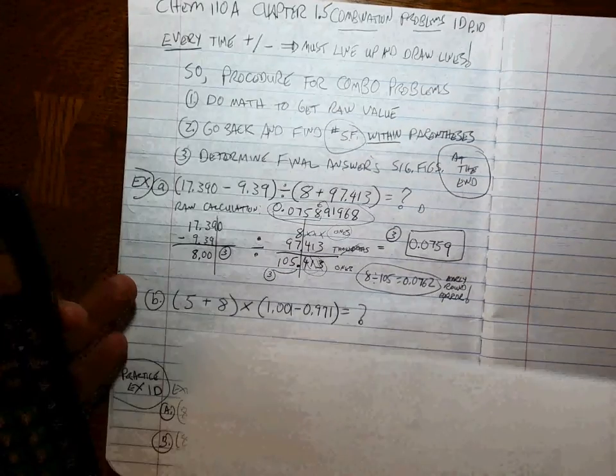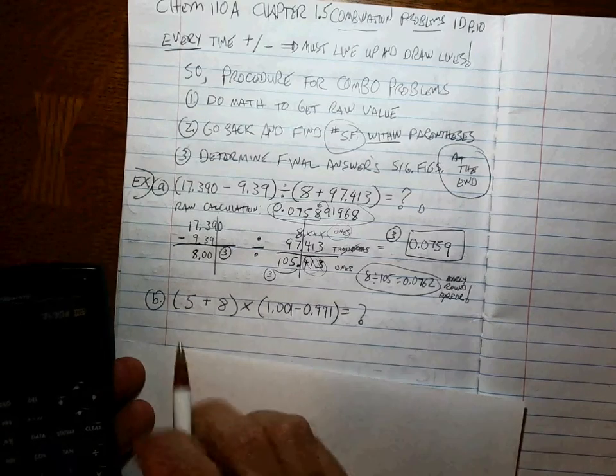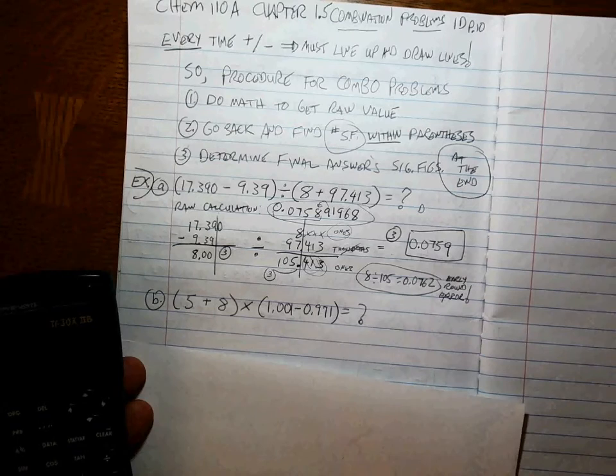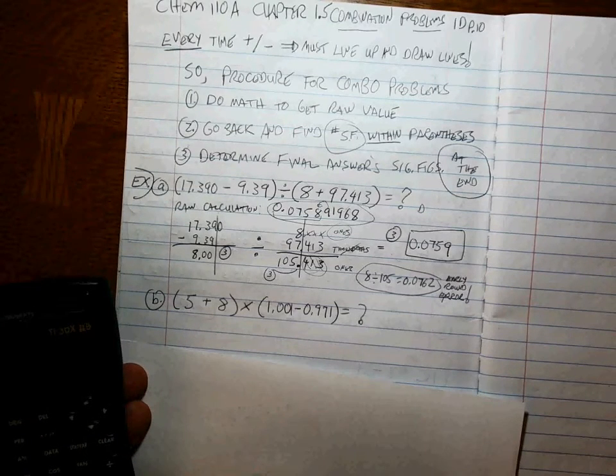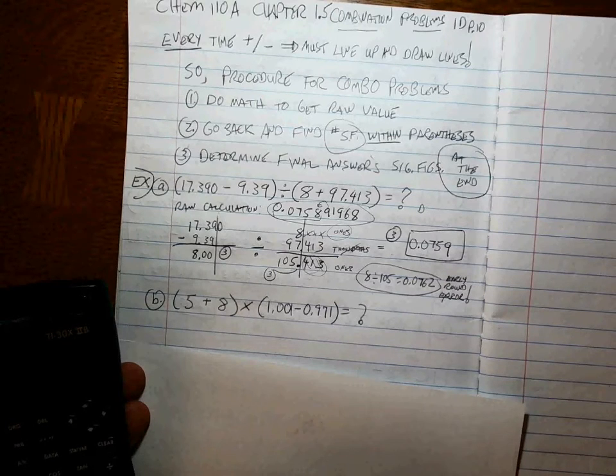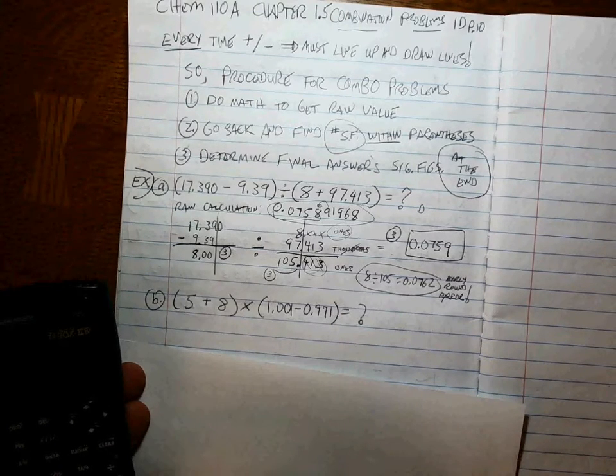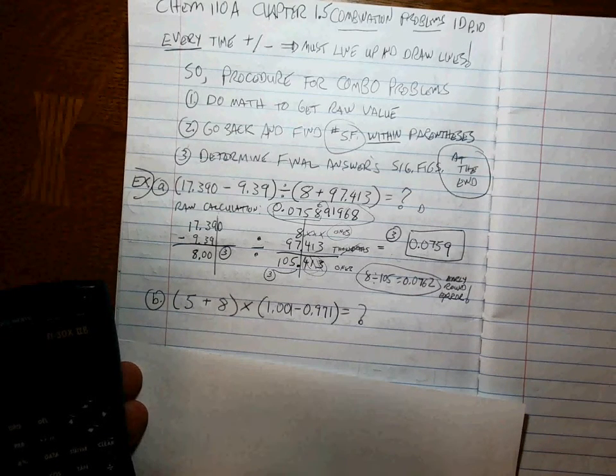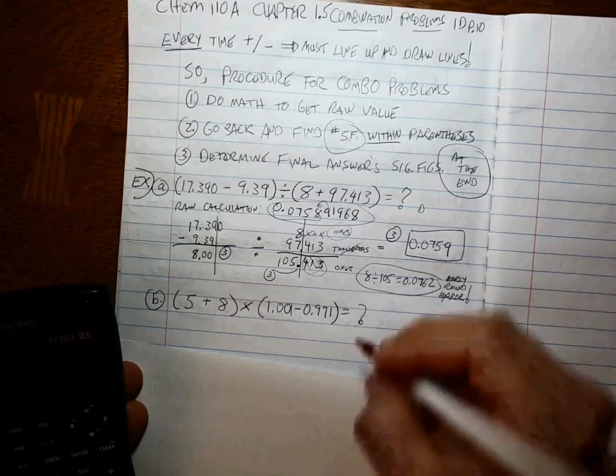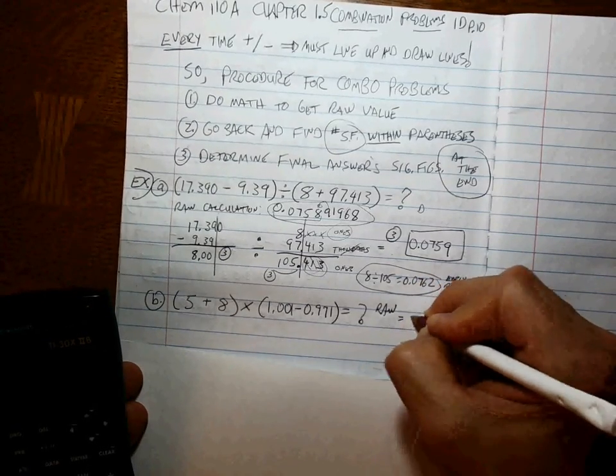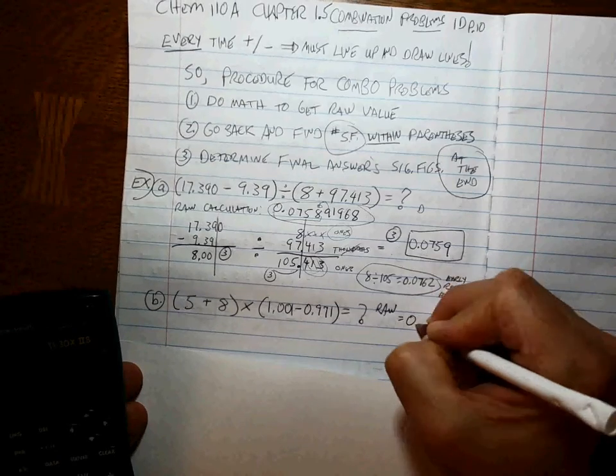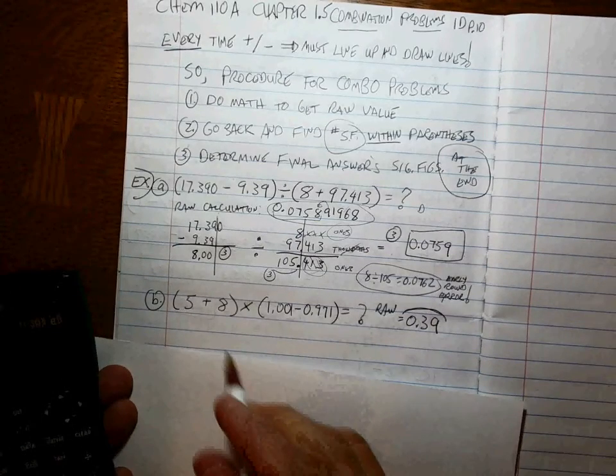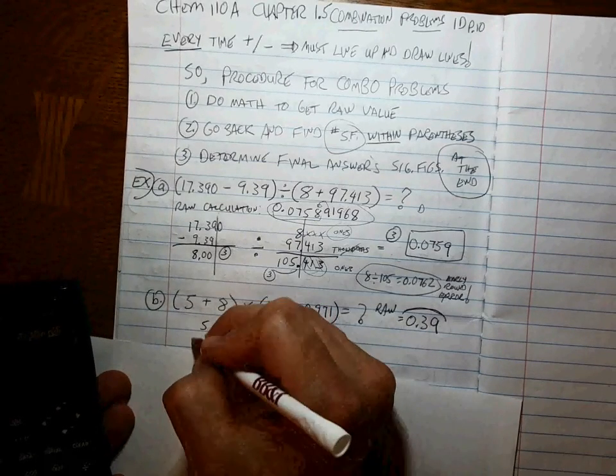Okay. Let's try a different problem. 5 plus 8 times 1.001 minus 0.971. If you think there's one sig fig, you better think again. Because 5 plus 8 times 1.001 minus 0.971 has a raw value, raw calculation of 0.39.